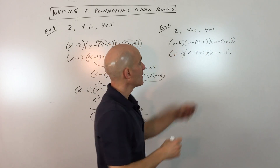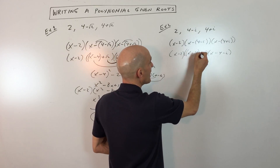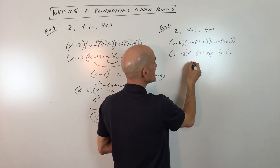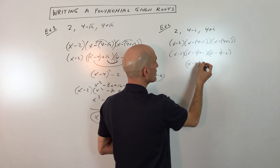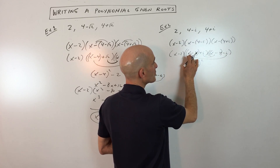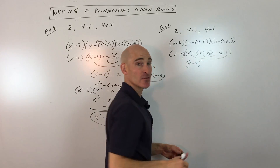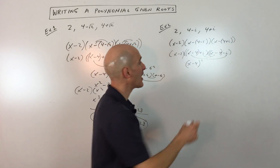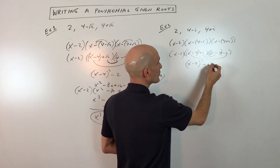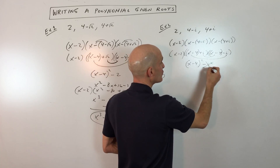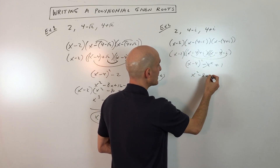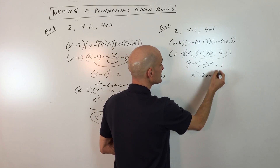Let's multiply these together by grouping the x minus 4s. The first terms give x minus 4 squared. The inner terms and outer terms cancel because you have negative i times x minus 4 and positive i times x minus 4 — those are opposite signs. Then i times negative i is negative i squared. Since i squared is negative 1, a negative times a negative makes this a positive 1. So foiling this out gives x squared minus 8x plus 16 plus 1, which is 17.